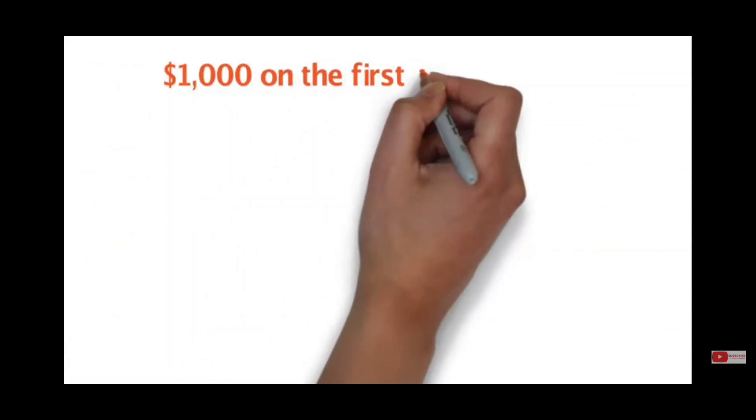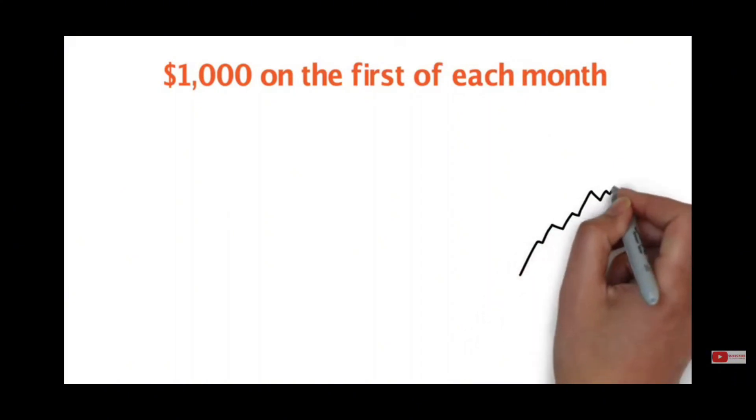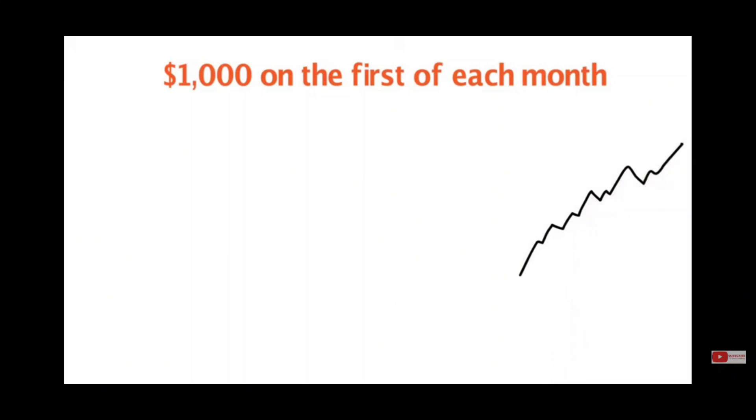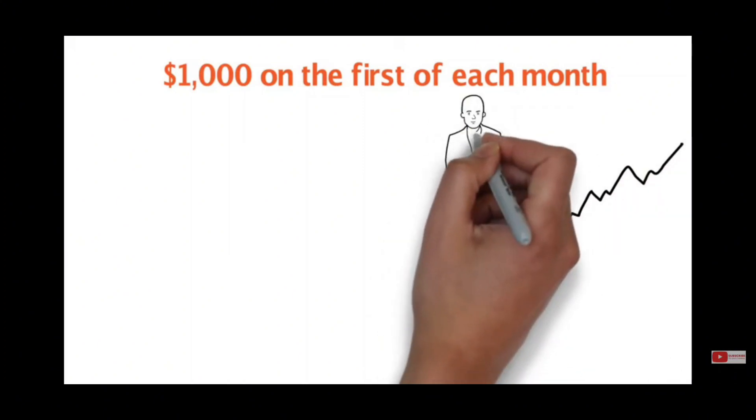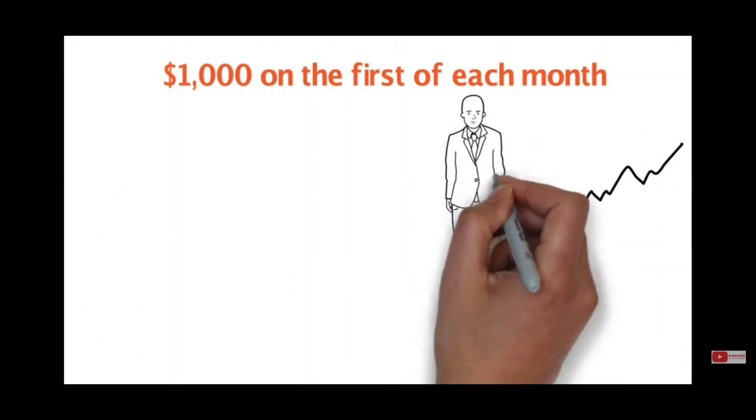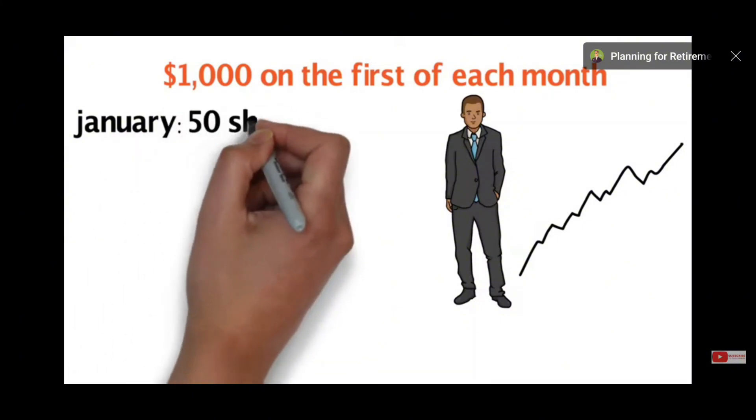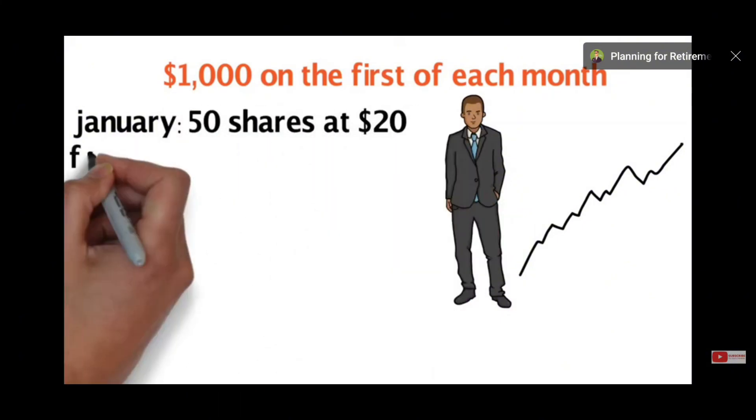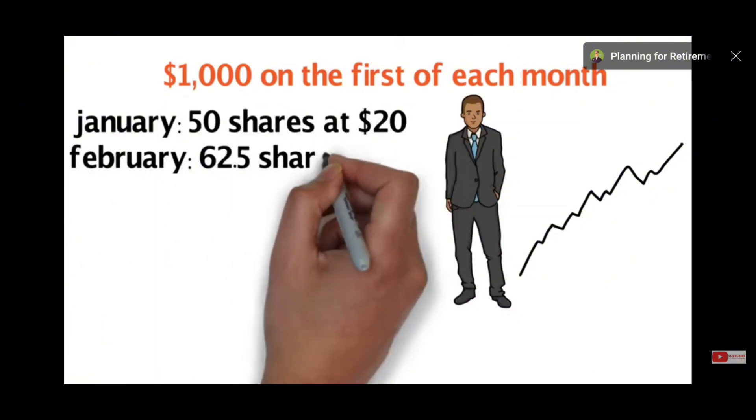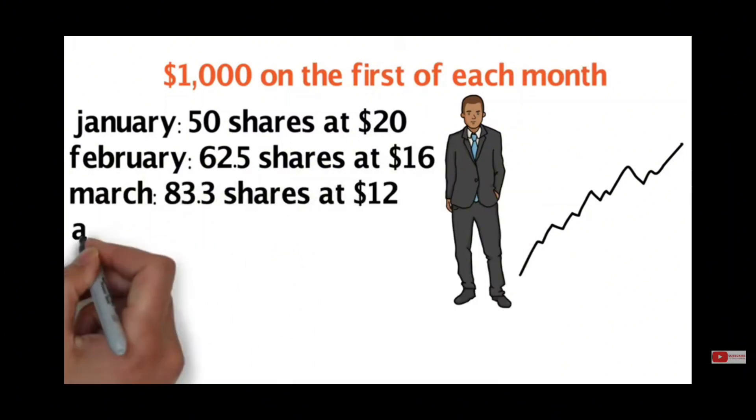For example, assume an investor deposits $1,000 on the first of each month into index fund XYZ, beginning in January. Like any investment, this fund bounces around in price from month to month. The investor keeps steadily putting $1,000 into the fund on the first of each month, while the number of shares the amount of money buys varies. In January, $1,000 bought 50 shares. In February, it bought 62.5 shares. In March, it bought 83.3 shares. In April, it was 58.2 shares. And in May, it was 43.48 shares.